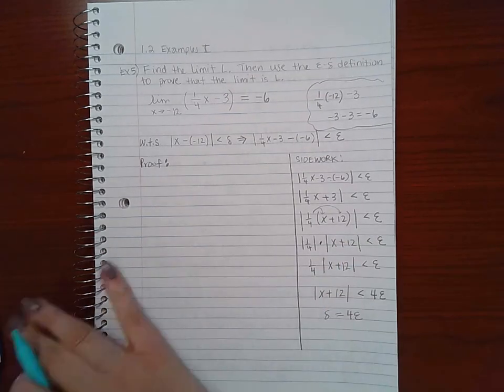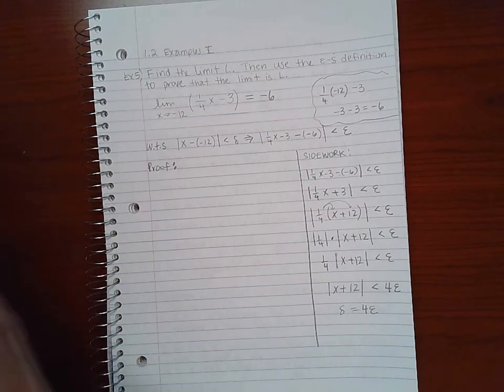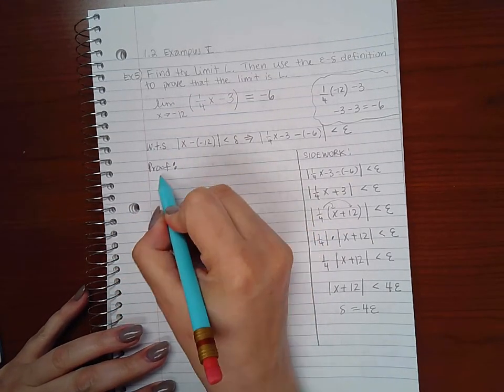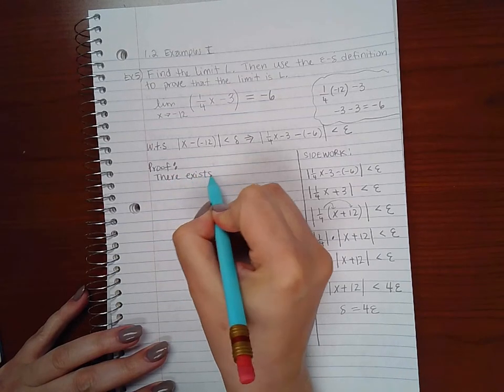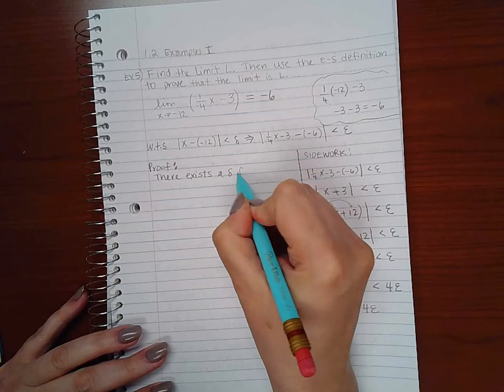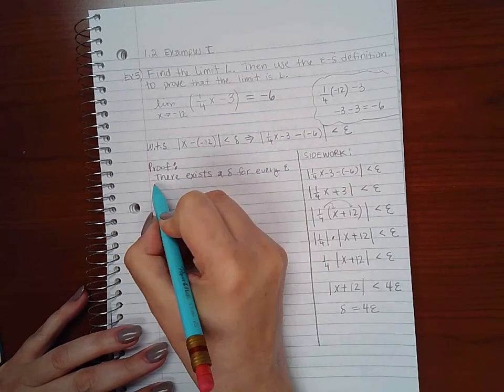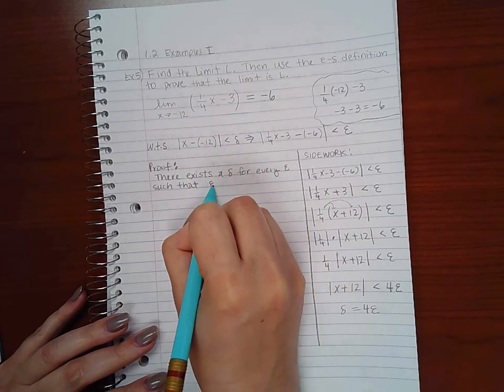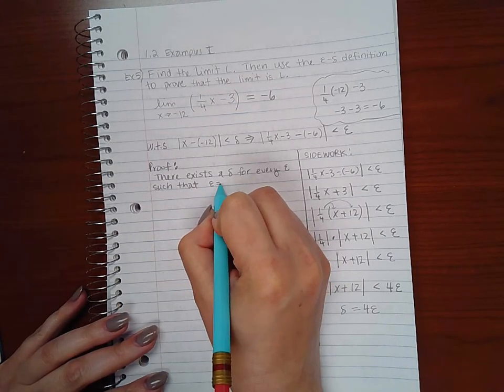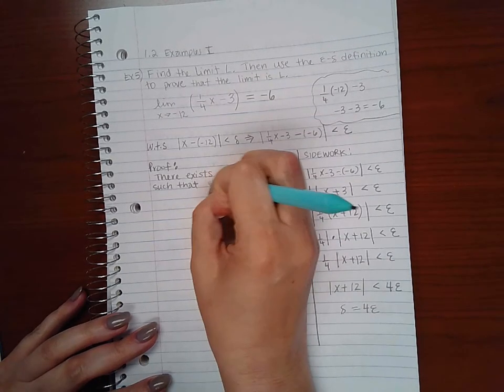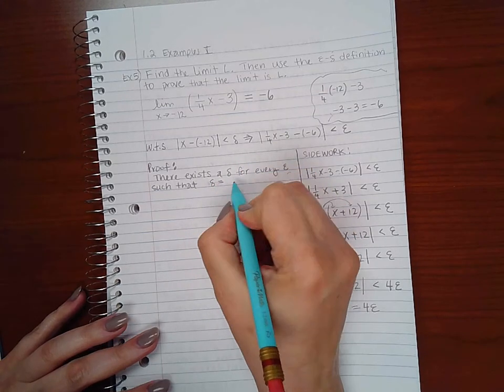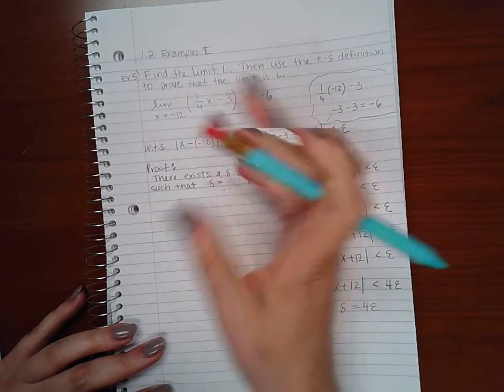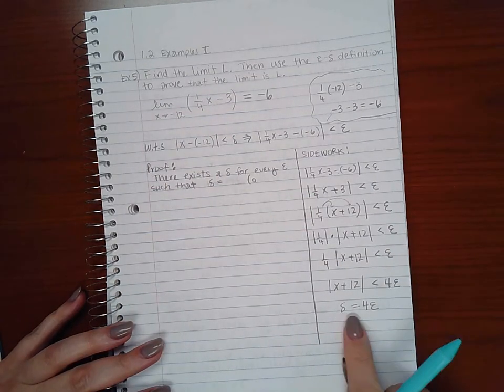Then when I'm going to my proof, we need to start from the beginning. How do I make the first implication? We're going to say that there exists a delta for every epsilon such that... or you can just say there exists a delta such that delta equals... epsilon over 2... or I'm sorry, delta does not equal epsilon over 2, delta equals 4 epsilon.